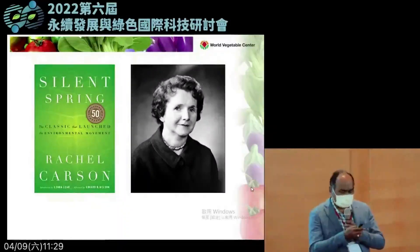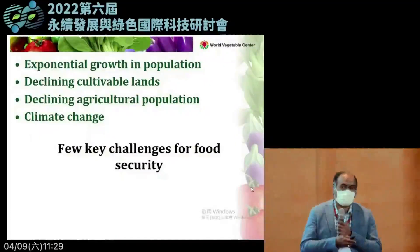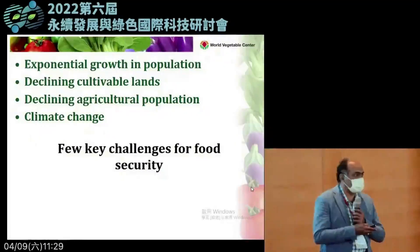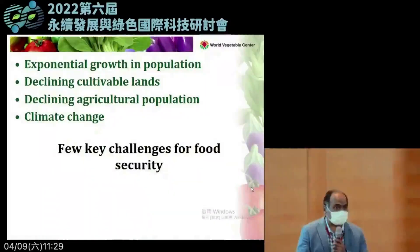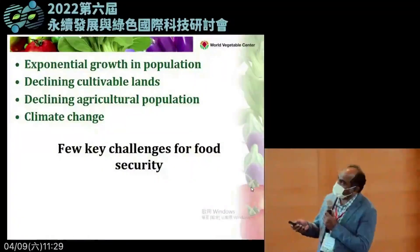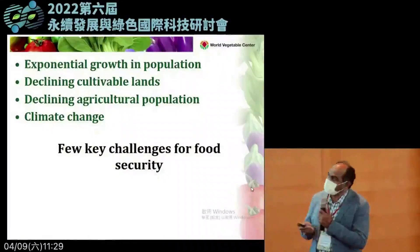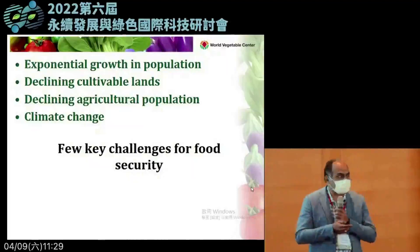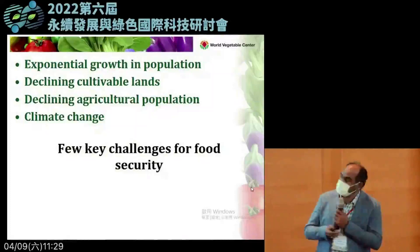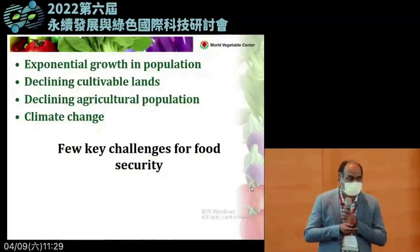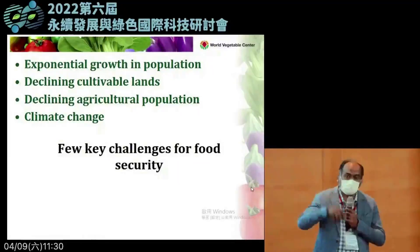This created a lot of awareness worldwide. If we look at the key challenges facing agriculture even today, some of the most important ones are the exponential growth of population, declining cultivable lands, declining agricultural population, and climate change — these are key challenges for food security even today.